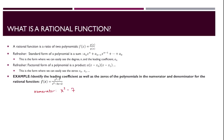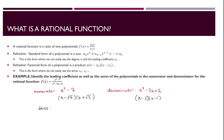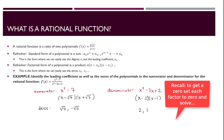For our numerator, we have x squared minus 7. This factors as x minus root 7 times x plus root 7 — remember, this is a difference of squares, and that'll help you factor a little bit quicker. Our denominator is x squared minus 3x plus 2, which factors as x minus 2 times x minus 1. We chose negative 2 and negative 1 because those add to the middle coefficient negative 3 and multiply to positive 2. Now that we have the factored form, we can very easily see the zeros: root 7 and negative root 7 for the numerator, and 2 and 1 for the denominator. To get those, we can set each factor equal to 0 and solve.